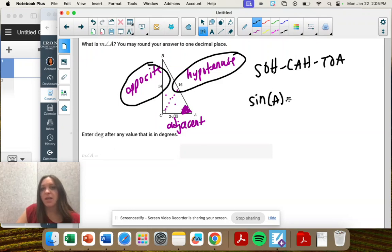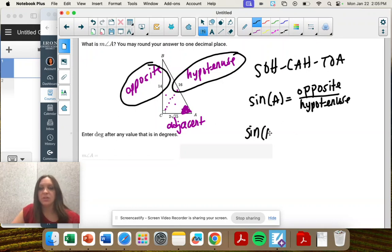So sine of some angle equals the opposite over the hypotenuse. And then we're going to fill in what we know. Angle A is what we're solving for. The opposite is 14 and the hypotenuse is 16.